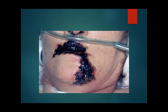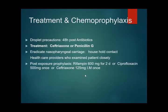For treatment and chemoprophylaxis: if meningococcal meningitis is suspected, droplet precautions should be observed for 48 hours post-antibiotics. Treatment uses ceftriaxone or penicillin G — nowadays ceftriaxone is widely used. Nasopharyngeal carriers in household close contacts and healthcare providers need prophylaxis: rifampicin 600 mg for 2 days, or ciprofloxacin 500 mg once only, or ceftriaxone 125 mg IM once.